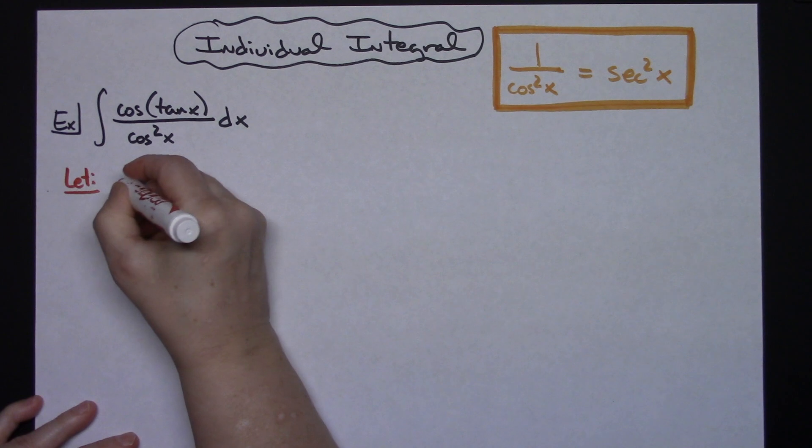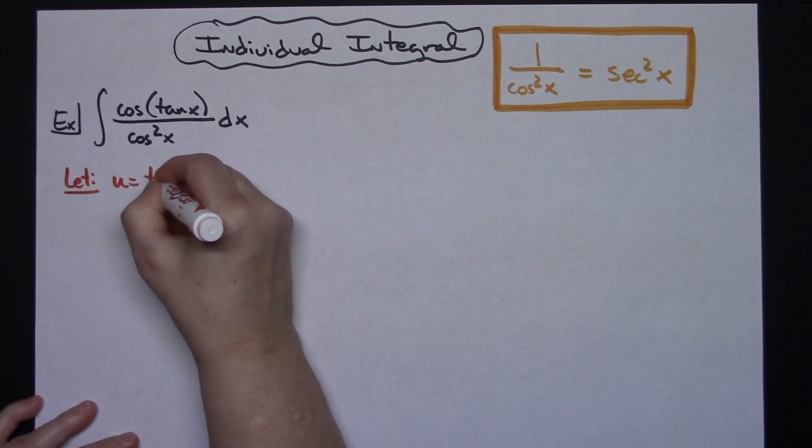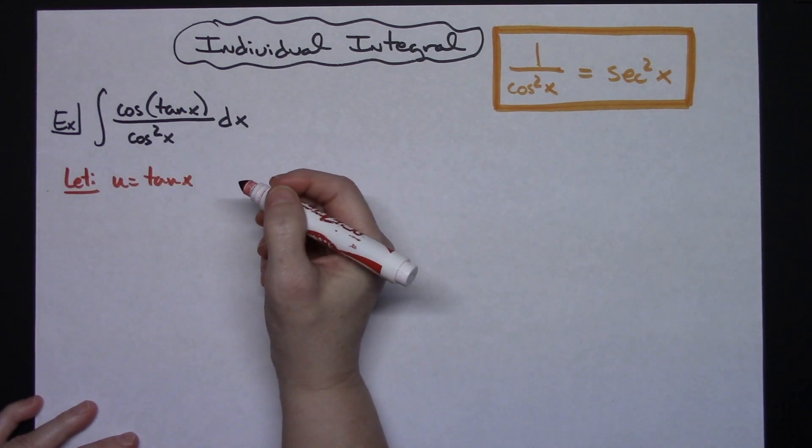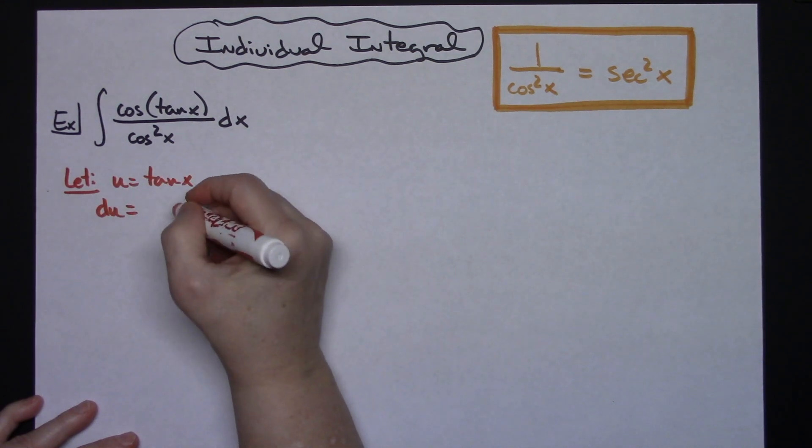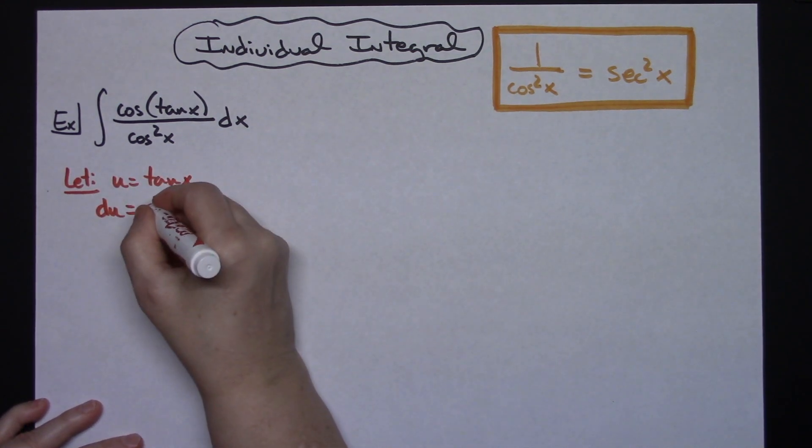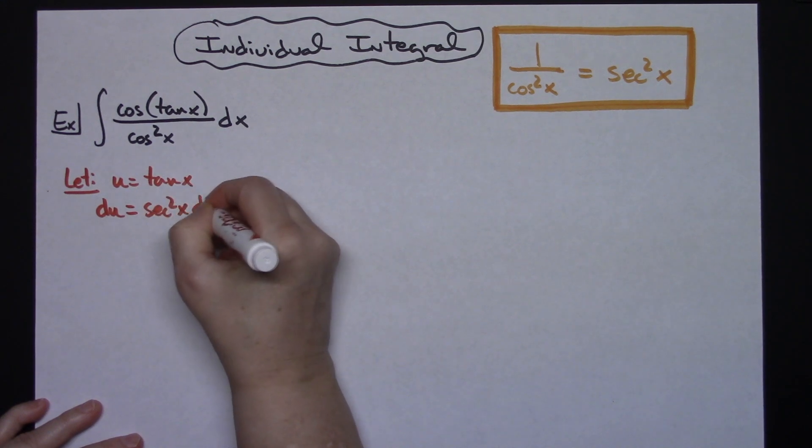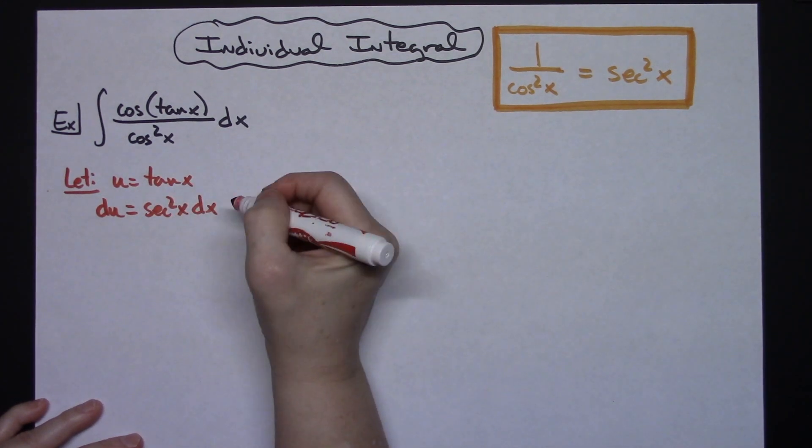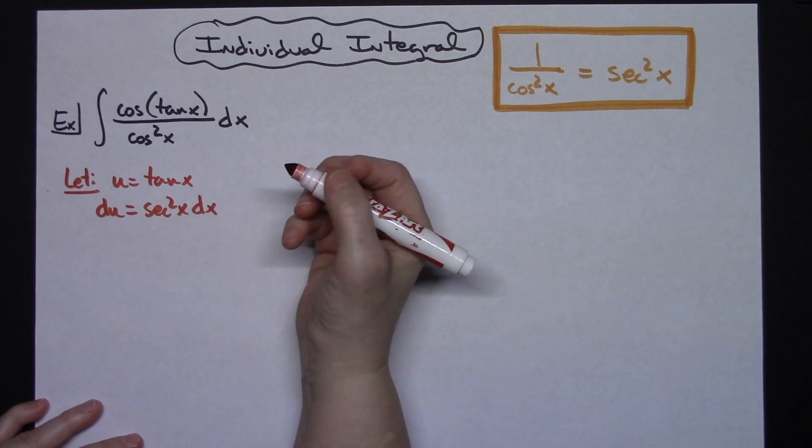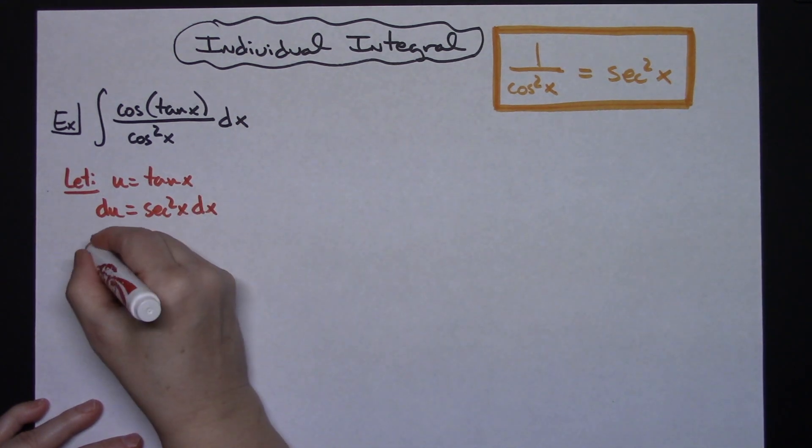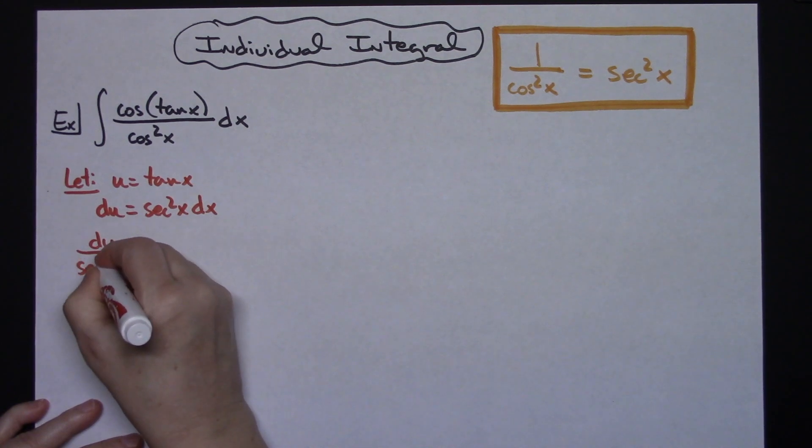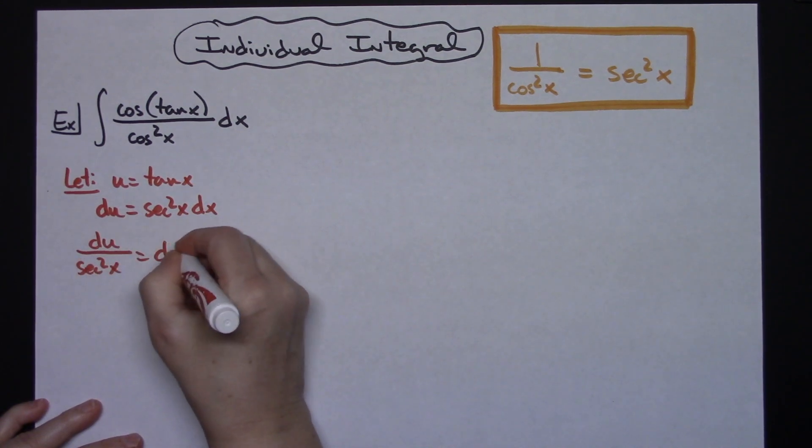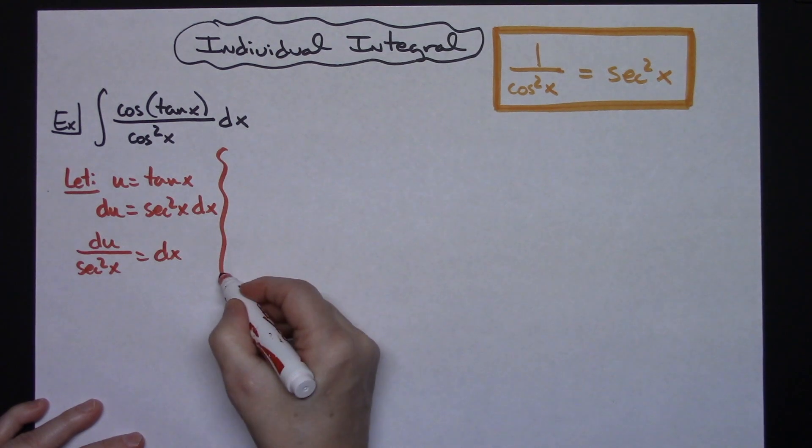I'm going to take the derivative of both sides, so du equals the derivative of tangent, which is secant squared x dx. To make the substitution a little easier, I'm going to solve for dx, so du over secant squared x equals dx.